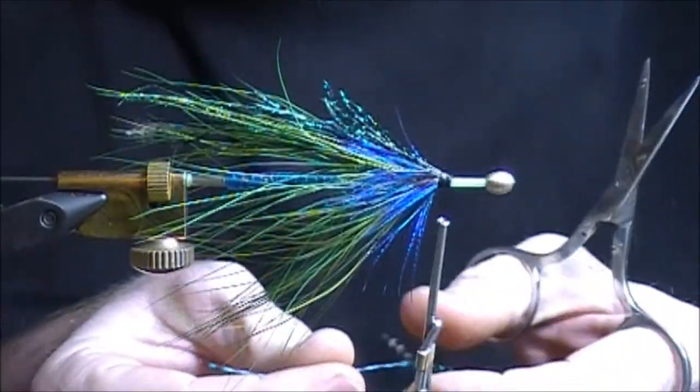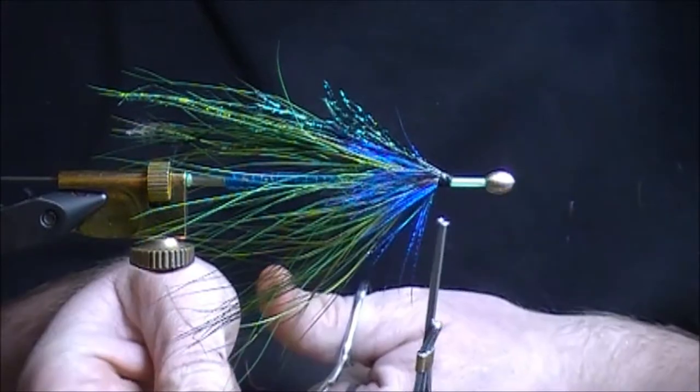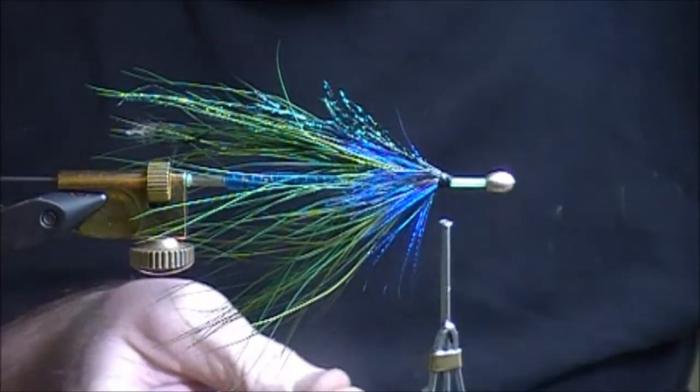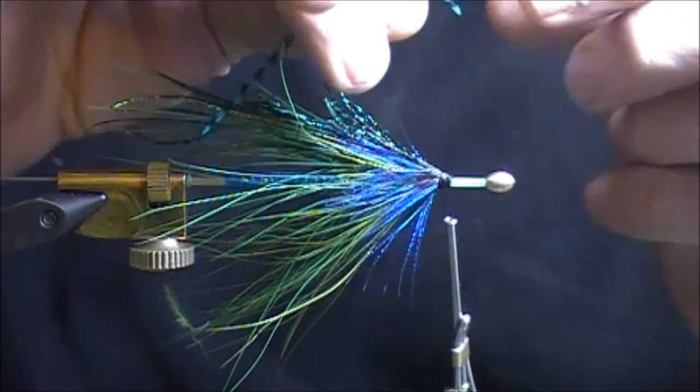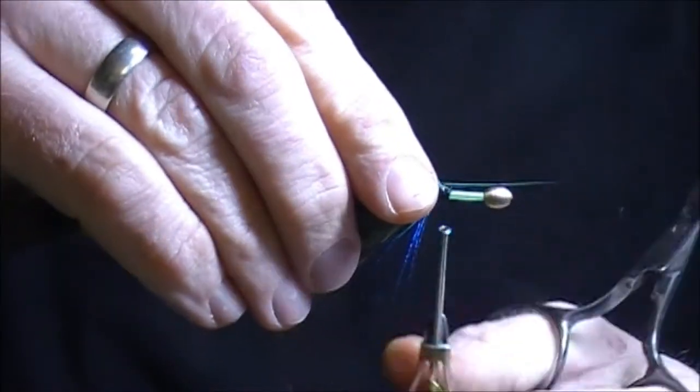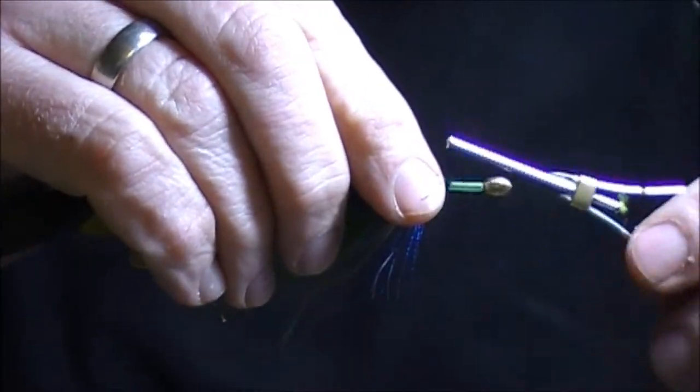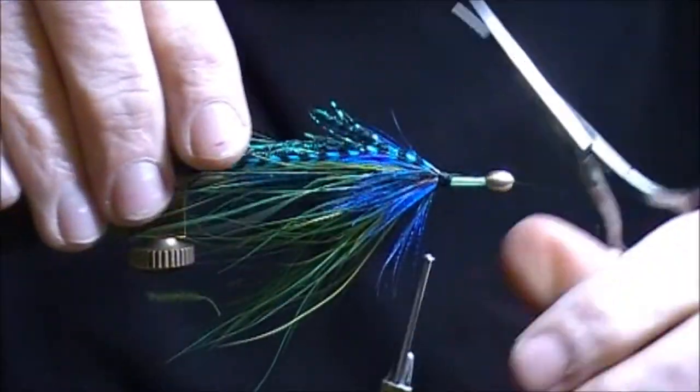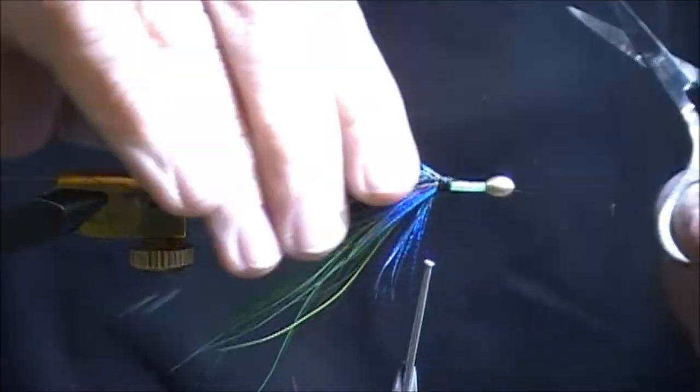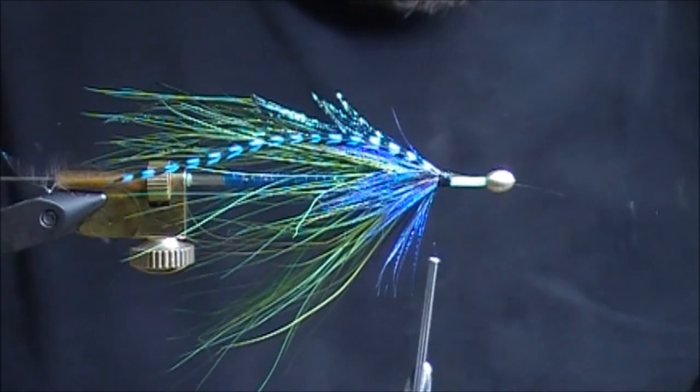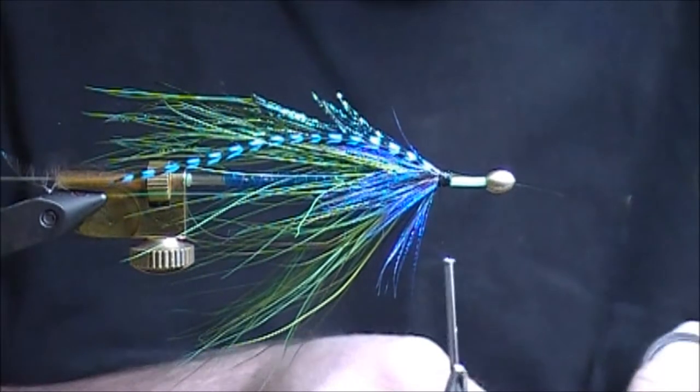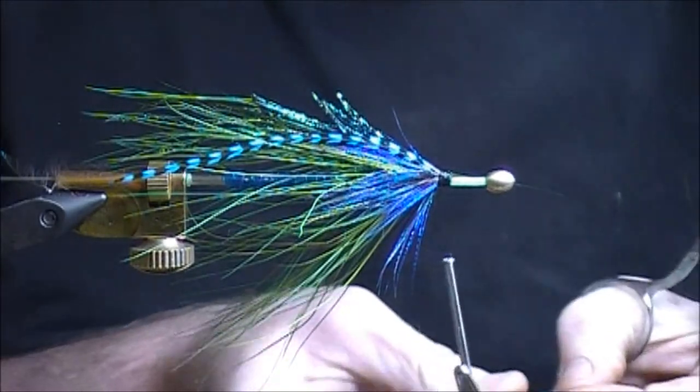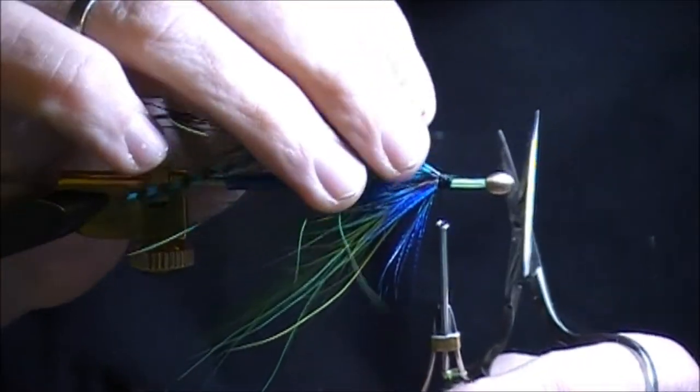At this point I'm just gonna add a little bit of intruder grizzly hackle, just gives it kind of a lateral line. I have to admit since we brought this stuff in, I add it to a lot of the flies. Okay, so one on each side.